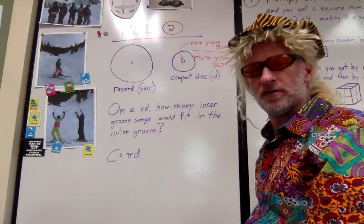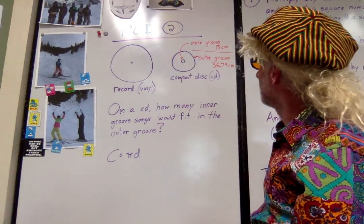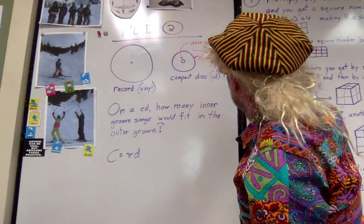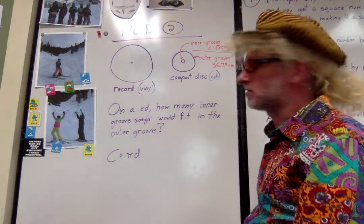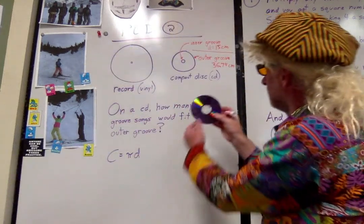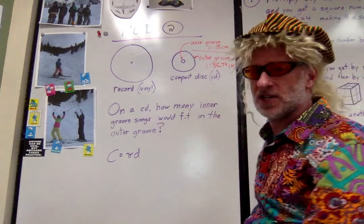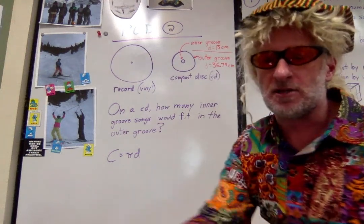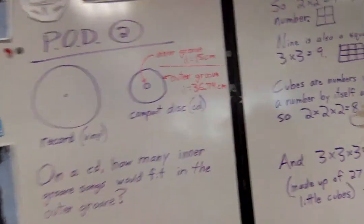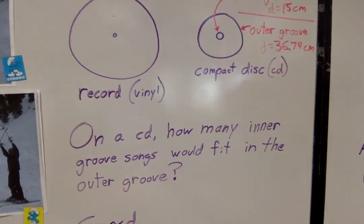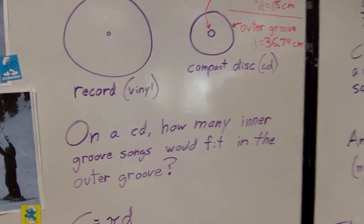Does that make sense? So the inner groove has a diameter of 15 centimeters on this here CD, but the outer groove is much much longer, it's 36.74 centimeters. Can you guys all see those numbers? So the question is on a CD, how many inner groove songs would fit in the outer groove?